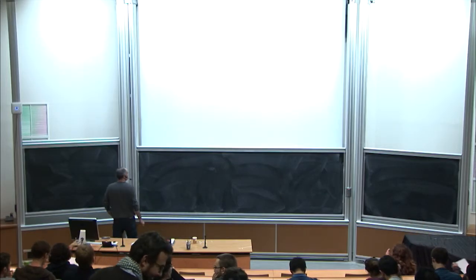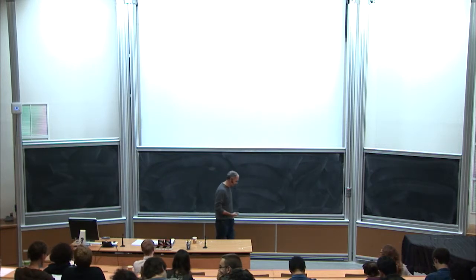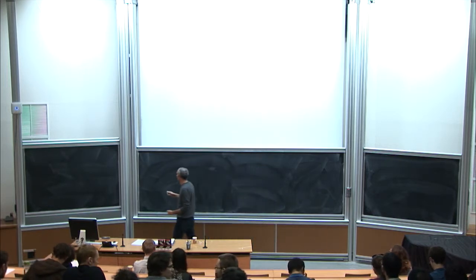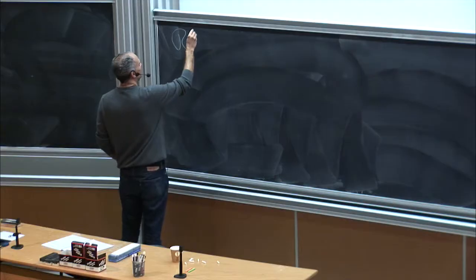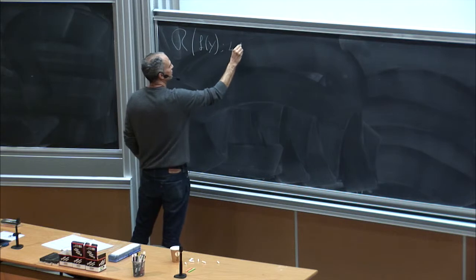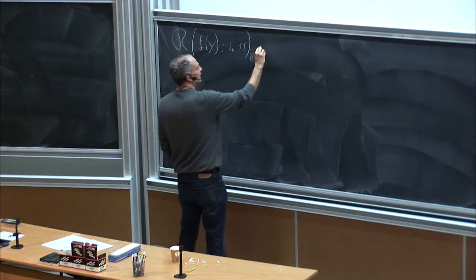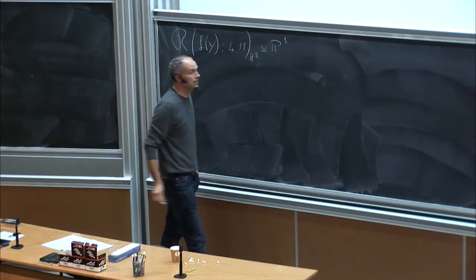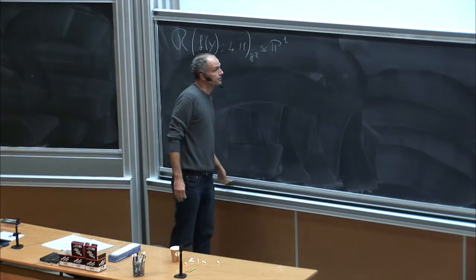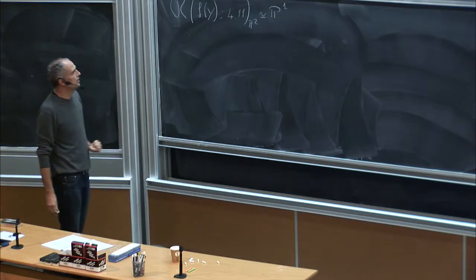Let me recall that yesterday we proved — we constructed this very special unirational, well rationally connected, variety which is P1. We had this RF of Y over P2 and we proved that this guy is just P1 — a linear system of degree 11 curves. The rational degree 11 curves, the generic one is irreducible, and we have all the gadgets we need.